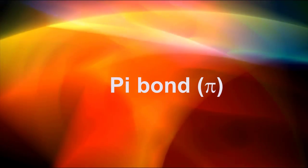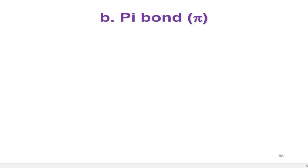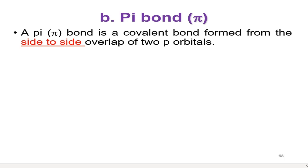We are going to discuss the formation of pi bond. Pi bond is formed when the orbital overlaps side to side or sideways overlapping. Here is the example when dumbbell overlaps side to side.